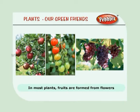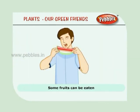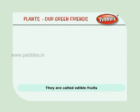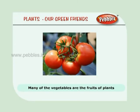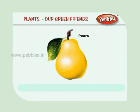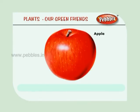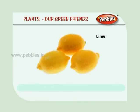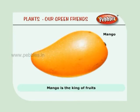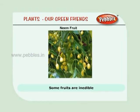In most plants, fruits are formed from flowers. They grow from a tiny part of a flower called the ovary. Some fruits can be eaten and they are called edible fruits. Some are inedible and we cannot eat them. Many of the vegetables that we eat are the fruits of plants. Some edible fruits are pears, apple, banana, mango, tomato, watermelon, grapes, lime, and orange. Mango is the king of fruits. Some fruits are inedible, like the neem fruit.